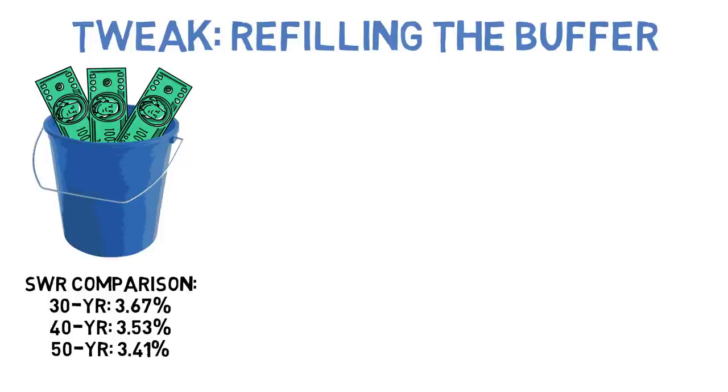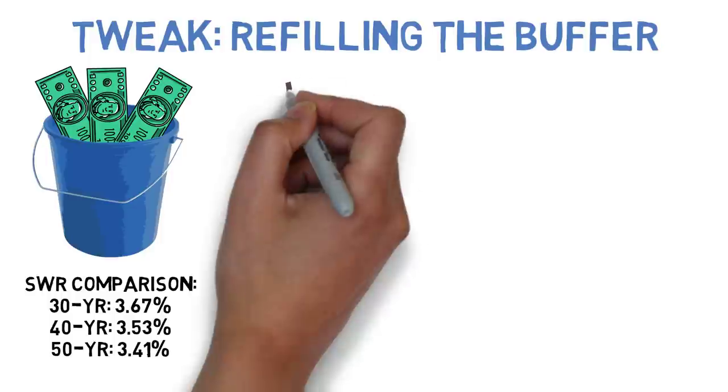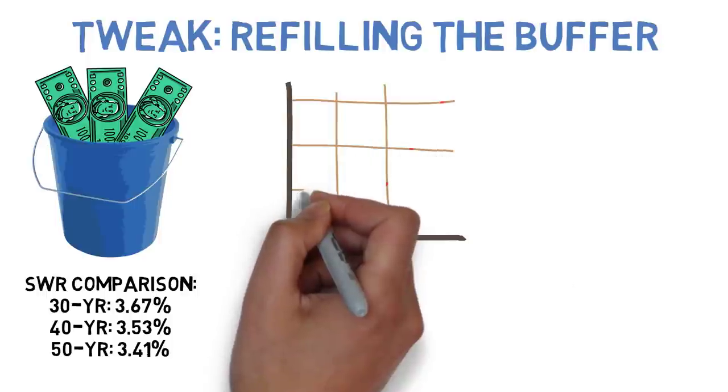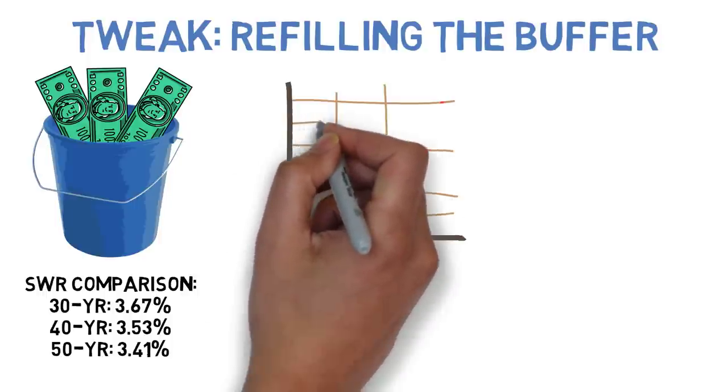The average withdrawal rates across all scenarios actually favored NOT refilling the bucket, though only by a margin of 0.03%, so either way you slice it the needle doesn't move much. The reason for this is pretty simple.